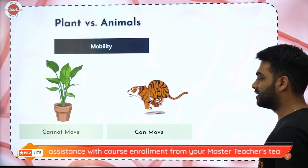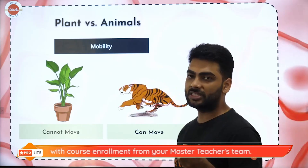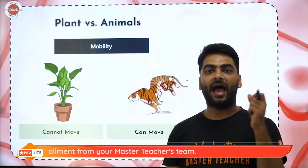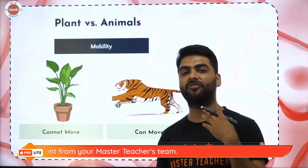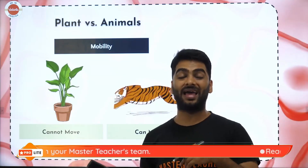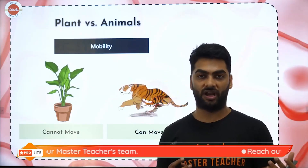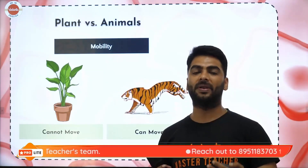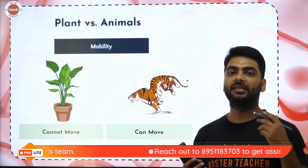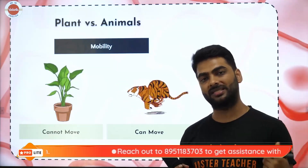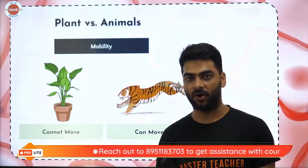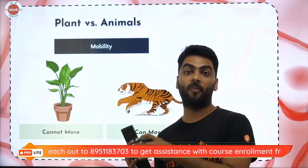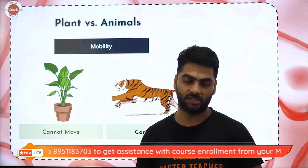Plant versus animals. The difference between plant and animal tissue is that animal tissues are far more complex because animals move around. Plus, animals have a very complex metabolism. They have many complex processes going on in their body and that is why animal tissues are far more complex as compared to plant tissues.